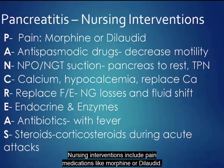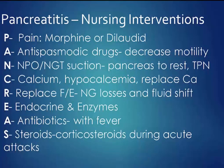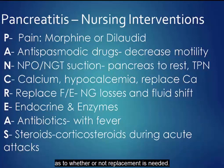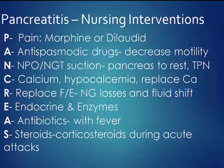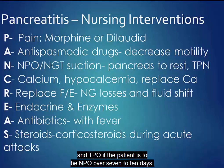Nursing interventions include pain medications like morphine or Dilaudid. Antispasmodic drugs help decrease GI motility. NPO is to rest the pancreas. Monitor calcium levels and look for clinical signs of whether or not replacement is needed. Monitor for hypocalcemia such as tetany, Trousseau's sign, and Chvostek's sign. Replace fluid and electrolytes including NG losses plus fluid shifts into the peritoneum. TPN if the patient is to be NPO over 7 to 10 days.